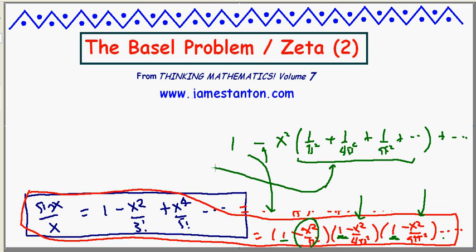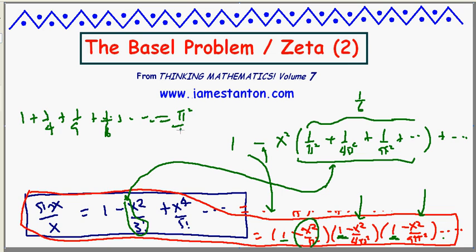But look, I know what this coefficient of x squared must be. It's right here, look at it. It must be negative 1 over 6. So this term here must be 1 sixth. Well, I've got a pi squared in the way, but if I multiply both sides by pi squared, I'm left with 1 plus 1 over 4, plus 1 over 9, plus 1 over 16, and so on, must be pi squared over 6. That's the value of zeta 2. Very, very clever.